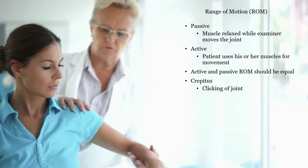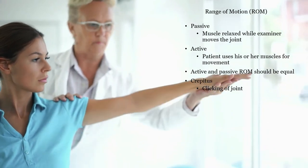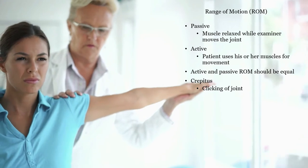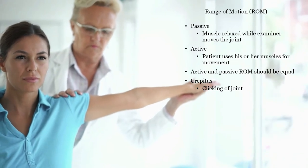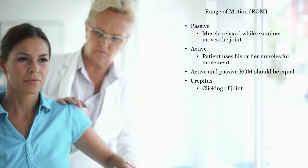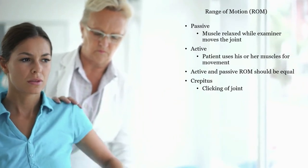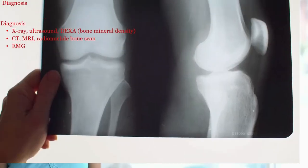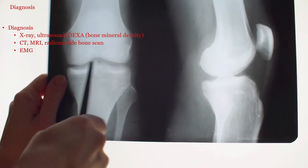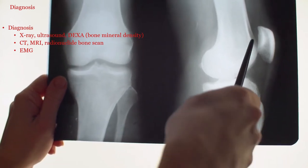Passive range of motion is what the examiner can do with the joint. Active range of motion is what the patient can do on their own. These should be equal, but with injury there may be reduction in one or both due to swelling, fracture, or tears in ligaments or tendons. Further examination of the muscles and bones can be done with X-rays, ultrasounds, DEXA scans, CT, MRI, bone scans, and EMGs.